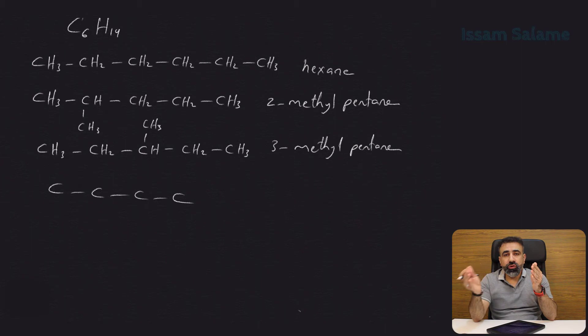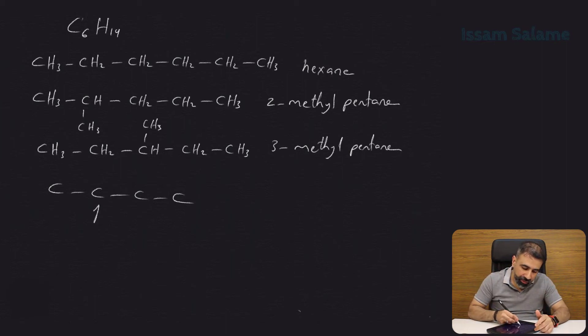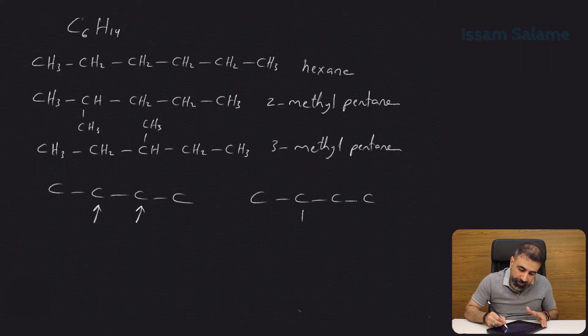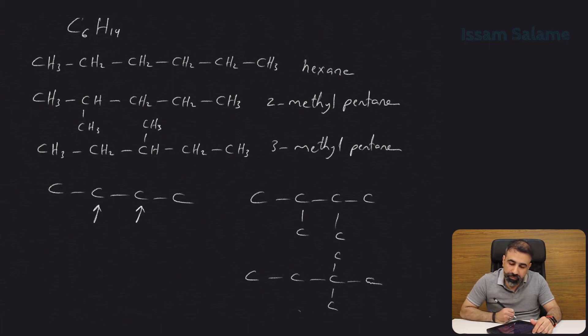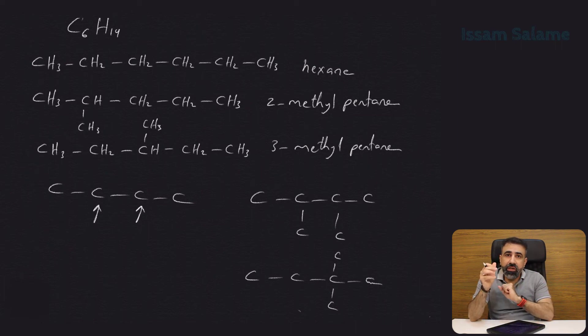Since we cannot add the groups to the end carbons, we will end up with two places to add these groups: either this carbon or this carbon. We can add one methyl to each of these carbons, or we can add two methyls to the same carbon. These are the only possible cases if we have four carbons in the main chain. Let me draw them and name them.